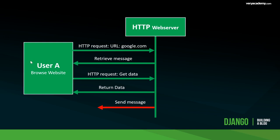User A makes a request to a site like google.com — that goes to the web server, and we receive data back. But what we can't do is have the server just send a message to User A unprompted. In a synchronous environment, we have to send a request to get a reply.